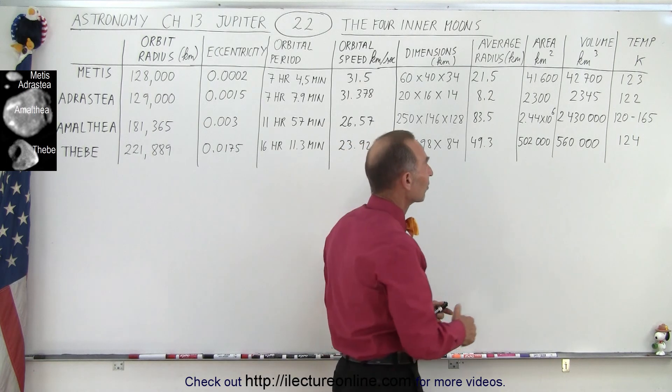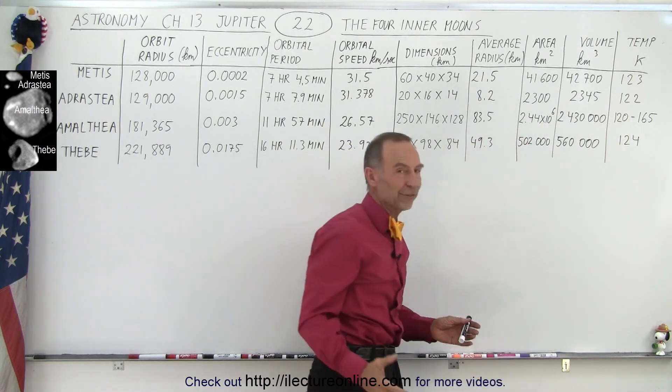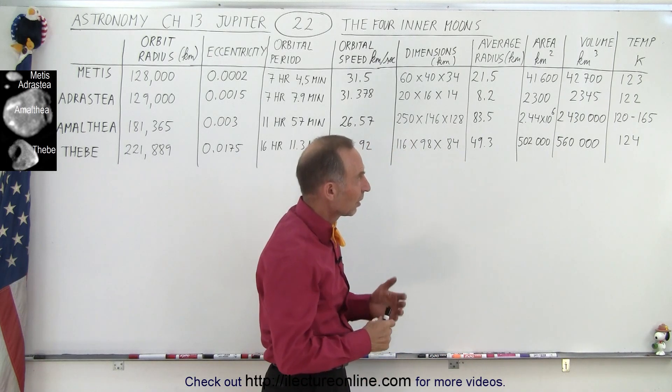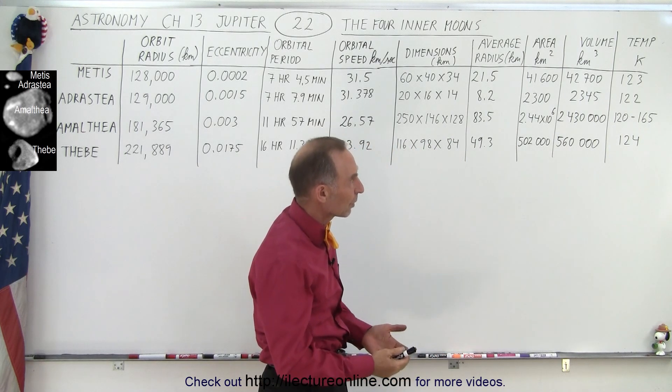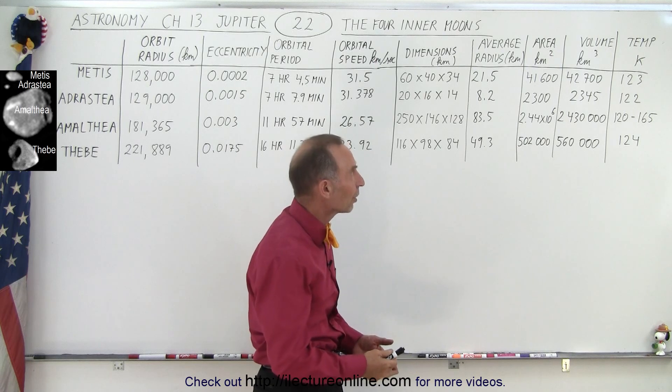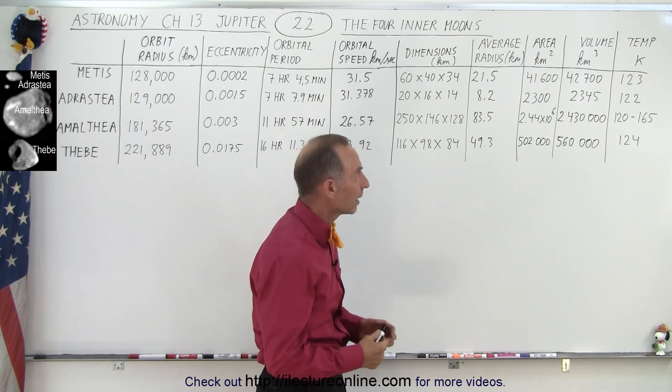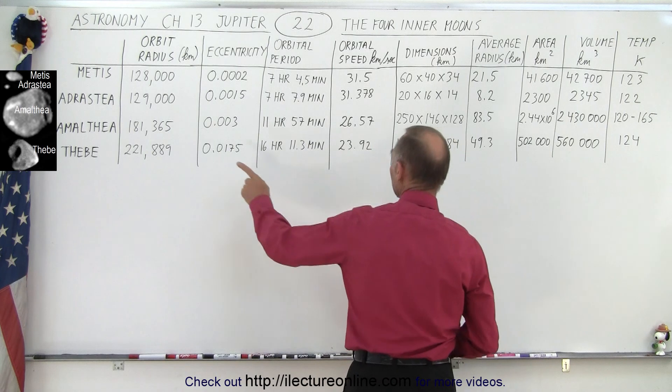Also, notice that the temperature is very nearly the same as the temperature you'll find on Jupiter, the surface temperature, about 123, 122, 120, 124. That would be Kelvin degrees. But notice, on Amalthea, you have temperatures ranging from 120 to 165.